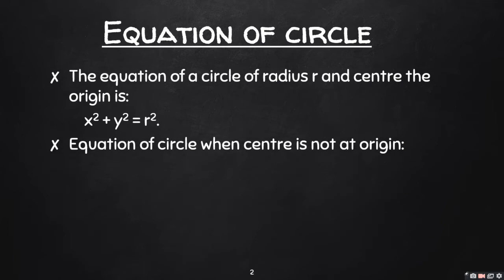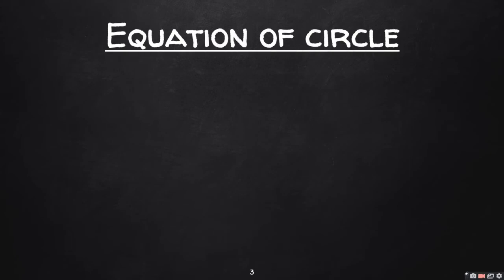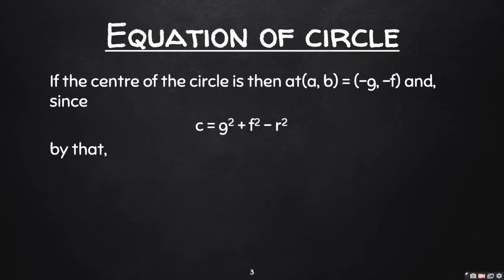The equation of a circle when the center is not at the origin is (x - a)² + (y - b)² = r². If the center of the circle is at (a, b) = (-g, -f),